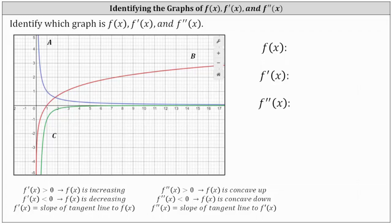We're asked to identify which graph is f of x, f prime of x the first derivative, and f double prime of x the second derivative. Let's begin with a review. If f prime of x is greater than zero, f of x is increasing. If f prime of x is less than zero, f of x is decreasing.